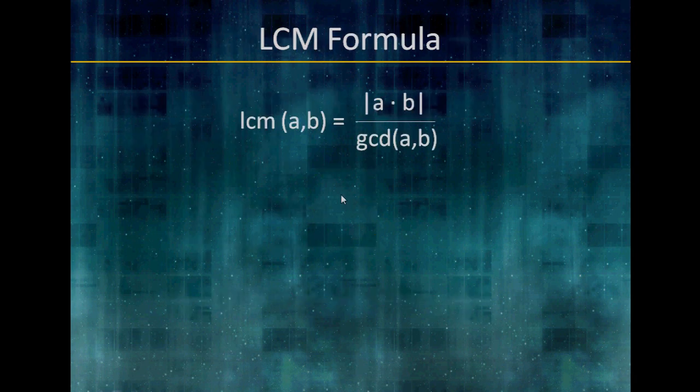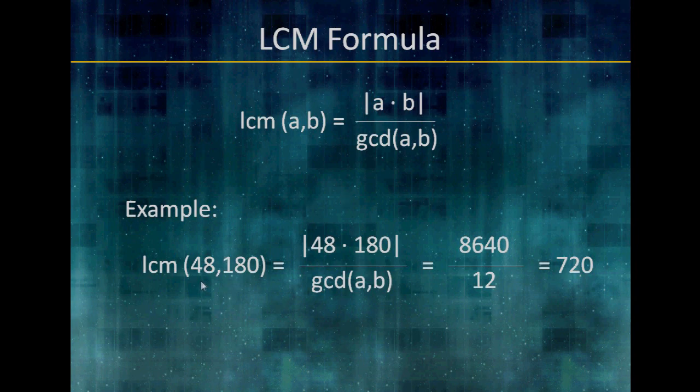Here is the formula for finding the least common multiple of two numbers. LCM of A and B equals the absolute value of A times B over the greatest common divisor of A and B. For example, LCM of 48 and 180 equals 48 times 180 over the GCD of 48 and 180, which equals 8,640 over 12, which is 720. Obviously for this formula, we're going to need to know the GCD, but we're going to find out that GCD is actually very efficient to find.